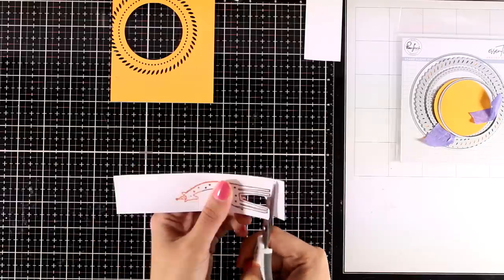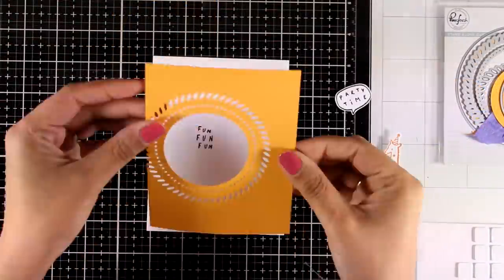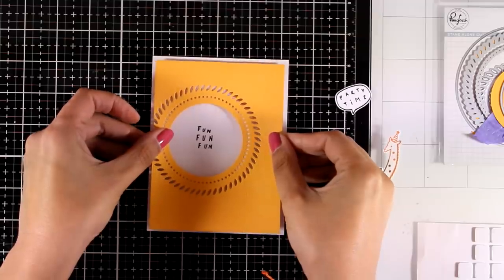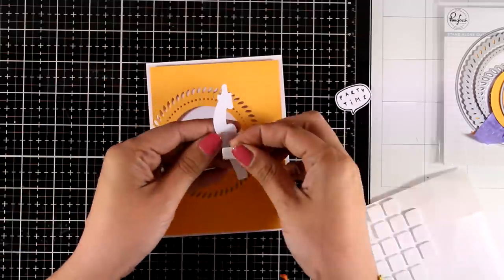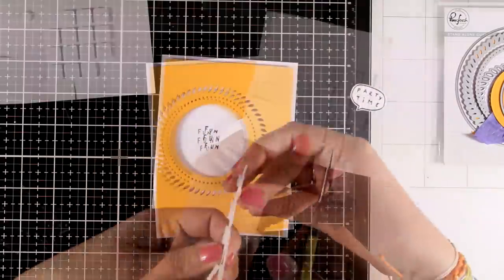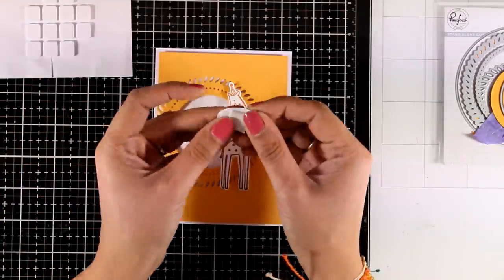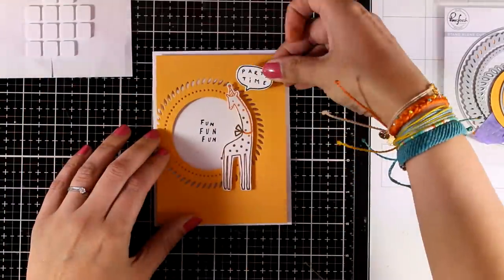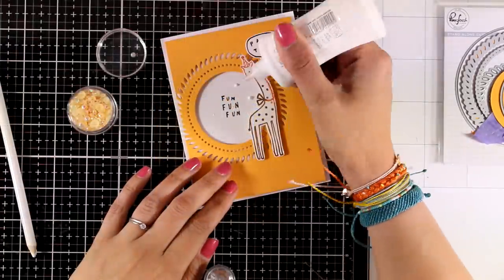Now I have everything ready to go. I used foam tape at the back of my yellow panel and all the sentiments come from the same stamp set as the giraffe. I'm going to use foam squares at the back of my focal points just to add some dimension. It's a quick and simple card to make, but those decorative dies really make a difference and give that interesting factor on my card.